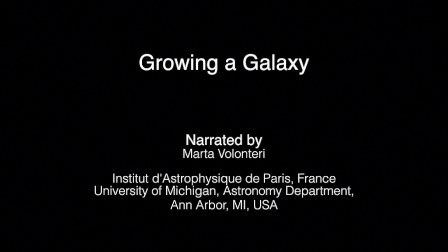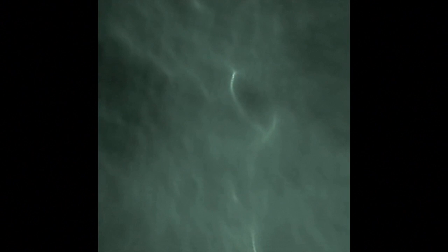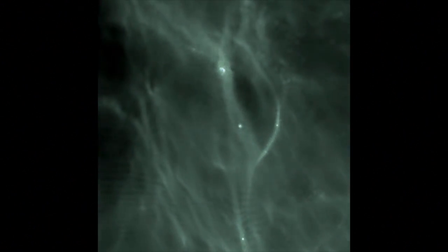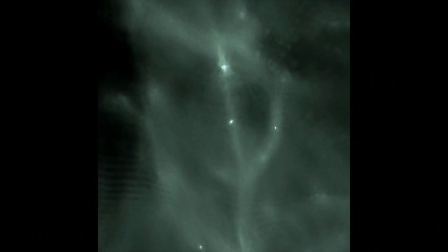Just a few million years after the Big Bang, the Universe was almost completely uniform. No stars, planets, or galaxies had formed yet. In this simulation of the early Universe, the green that we see is only gas. Initially, this gas permeates the Universe as it traces the distribution of invisible dark matter.